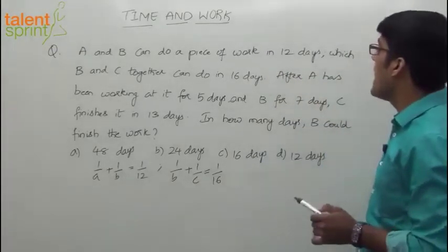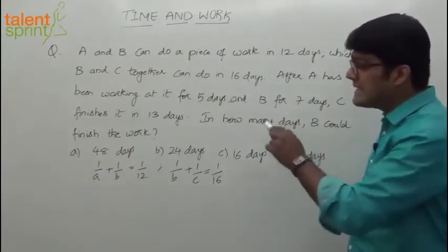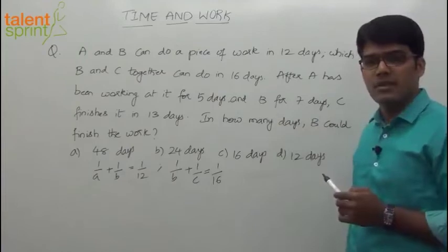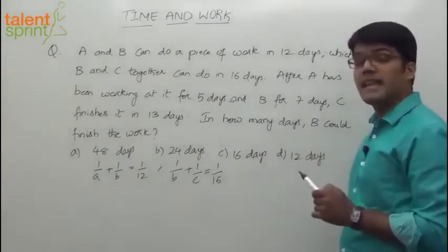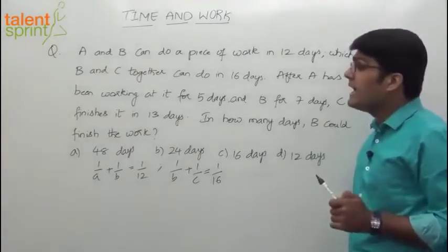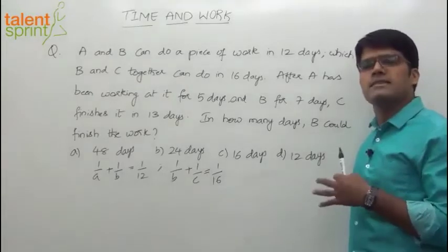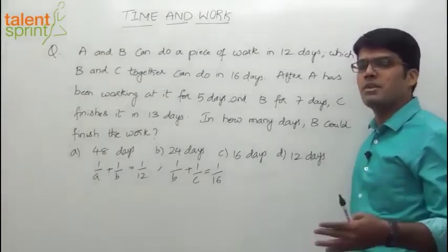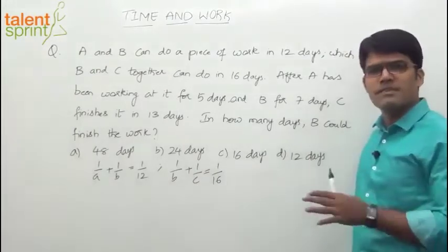Now see what it says. After A has been working at it for 5 days and B for 7 days, C finishes it in 13 days. So what happened here? First A has worked on it for how many days? 5 days. And then B worked on it for 7 days, and then finally C finishes the work in 13 days. So that's like all three persons are working but not simultaneously. First A works for some number of days, then followed by B for some days, followed by C for the remaining 13 days.